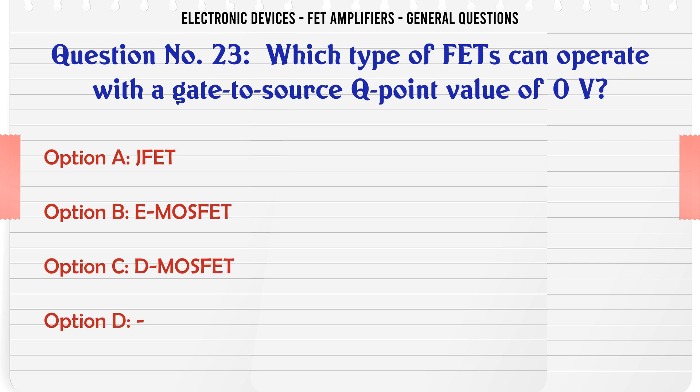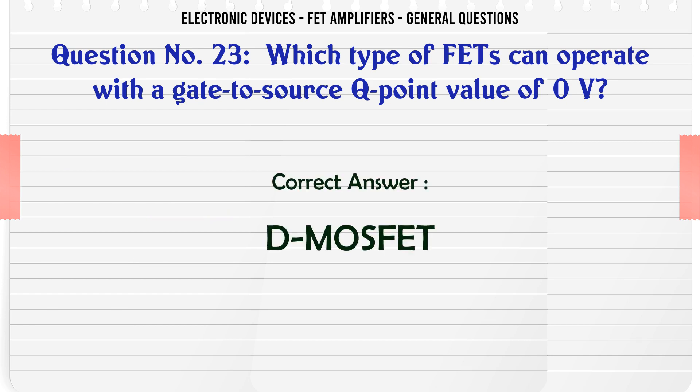Which type of FETs can operate with a gate-to-source Q-point value of 0V? A. JFET. B. E-MOSFET. C. D-MOSFET. D. (no option). The correct answer is D-MOSFET.